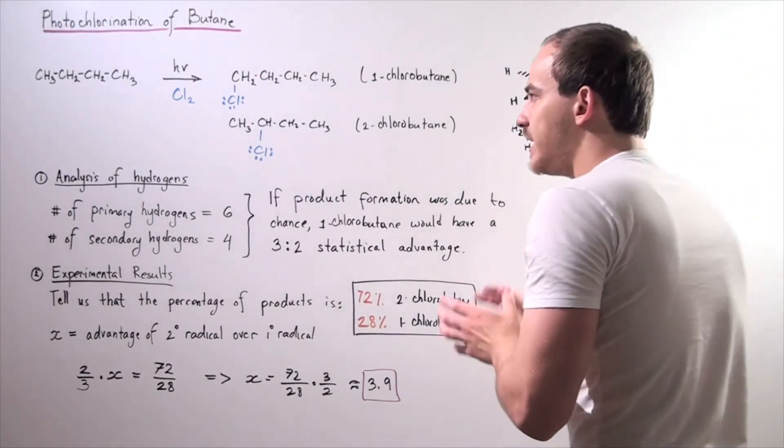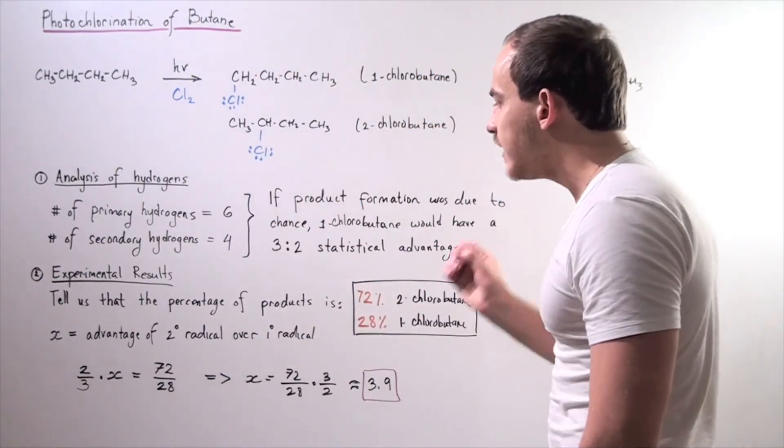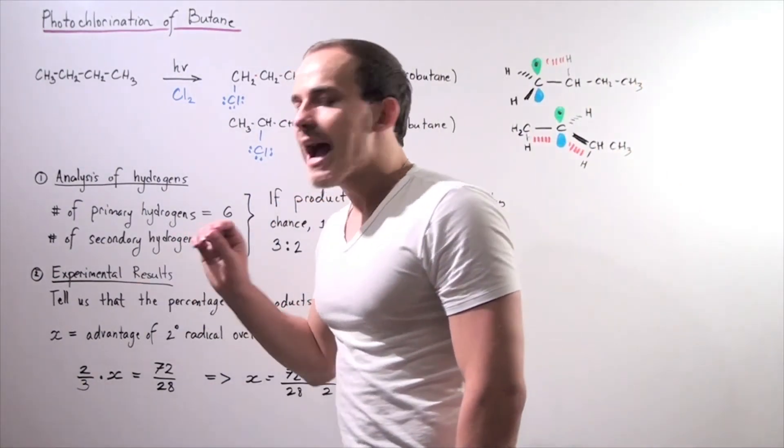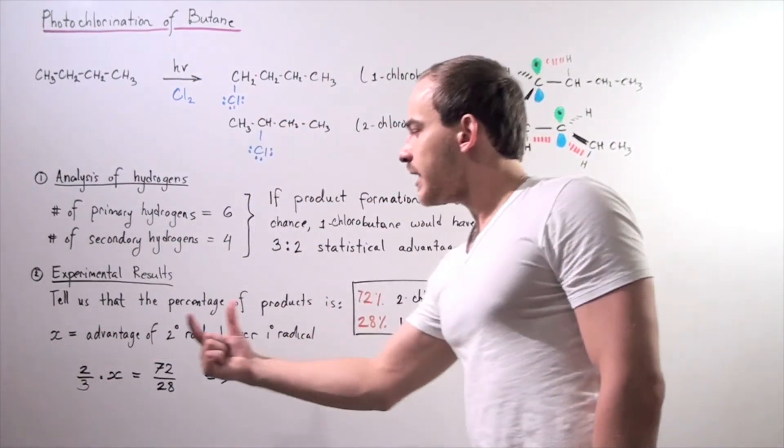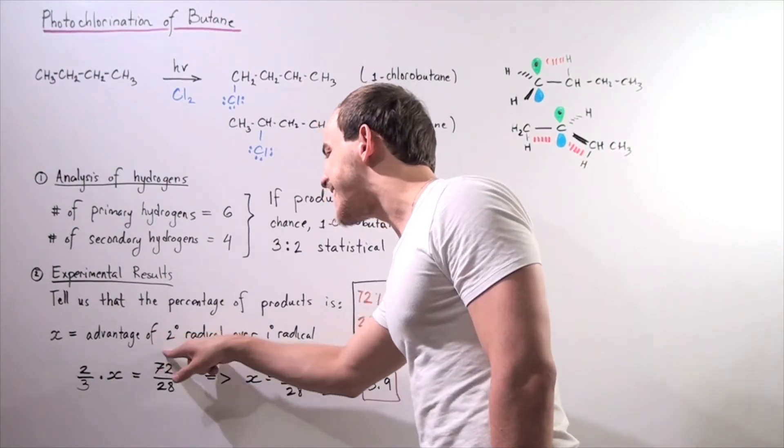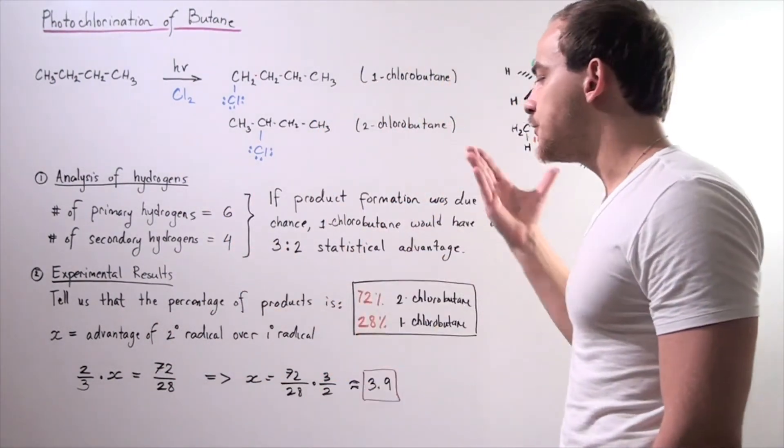But what exactly is the value of this advantage? So let's calculate it using the following algebraic formula. Let's say that x is the advantage of the secondary radical over our primary radical intermediate.